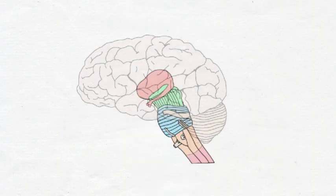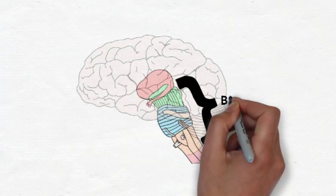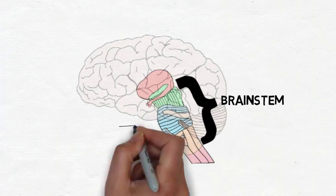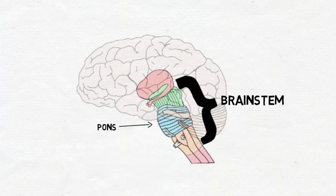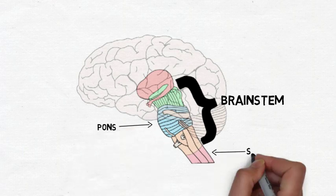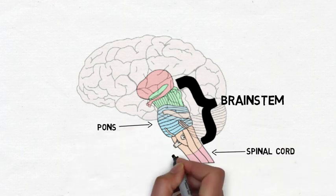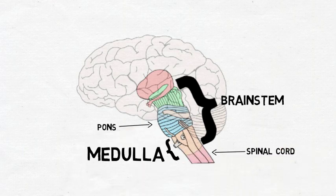The medulla oblongata, or the medulla, is the lowest part of the brainstem, found below the pons and above the spinal cord. There is no clear separation between the medulla and the spinal cord; instead, the spinal cord gradually transitions into the medulla.